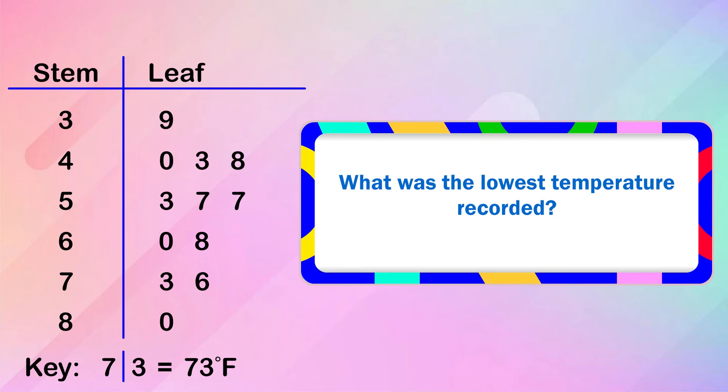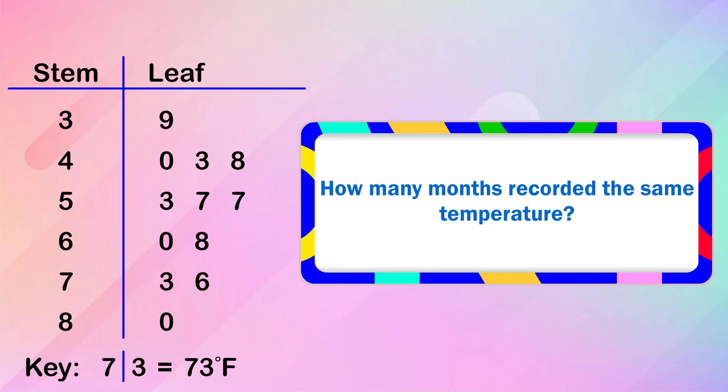What was the lowest temperature recorded? 39 degrees Fahrenheit. How many months recorded the same temperature? Two months recorded a temperature of 57 degrees Fahrenheit.